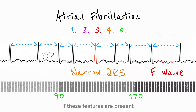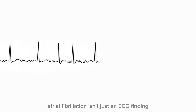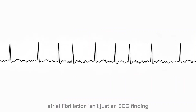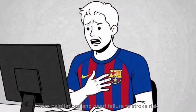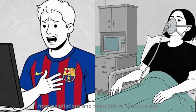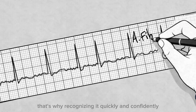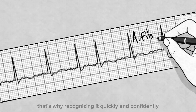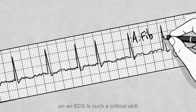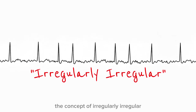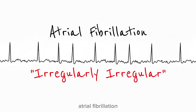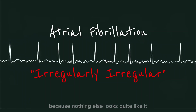If these features are present, the diagnosis becomes clear. Atrial fibrillation isn't just an ECG finding — it's a rhythm with major clinical consequences, from palpitations and heart failure to stroke risk. That's why recognizing it quickly and confidently on an ECG is such a critical skill. Once you truly understand the concept of irregularly irregular, atrial fibrillation becomes one of the easiest rhythms to spot, because nothing else looks quite like it.